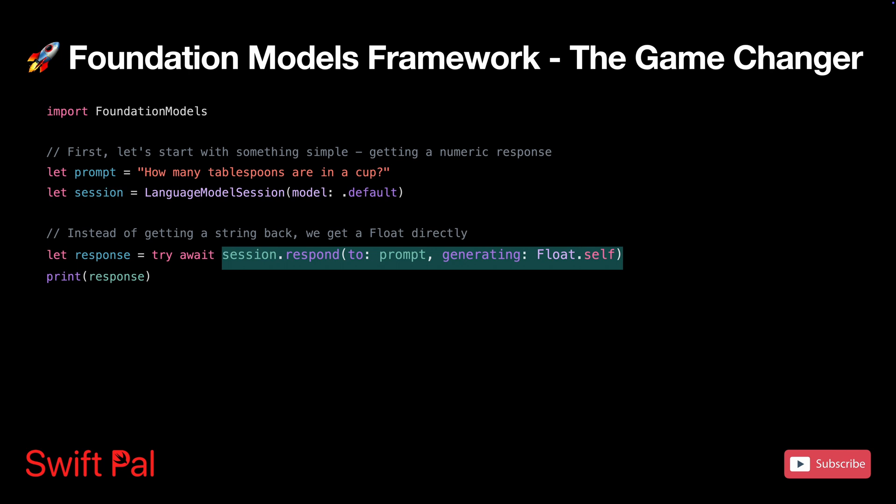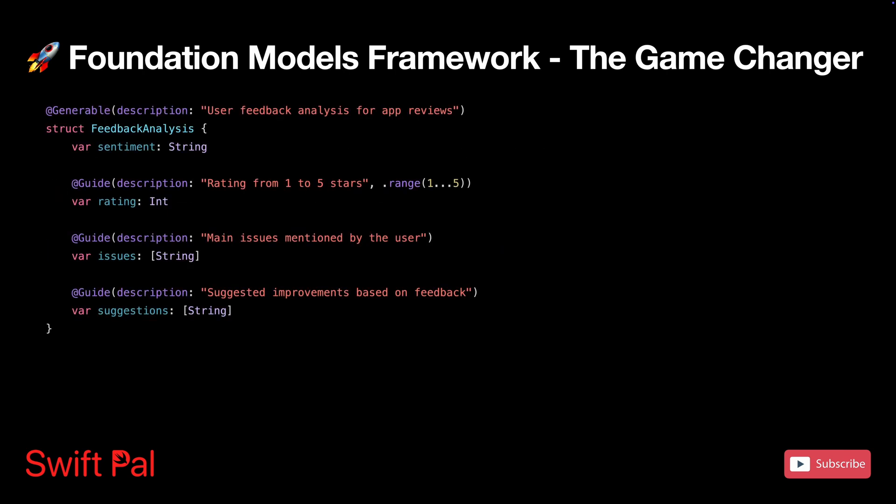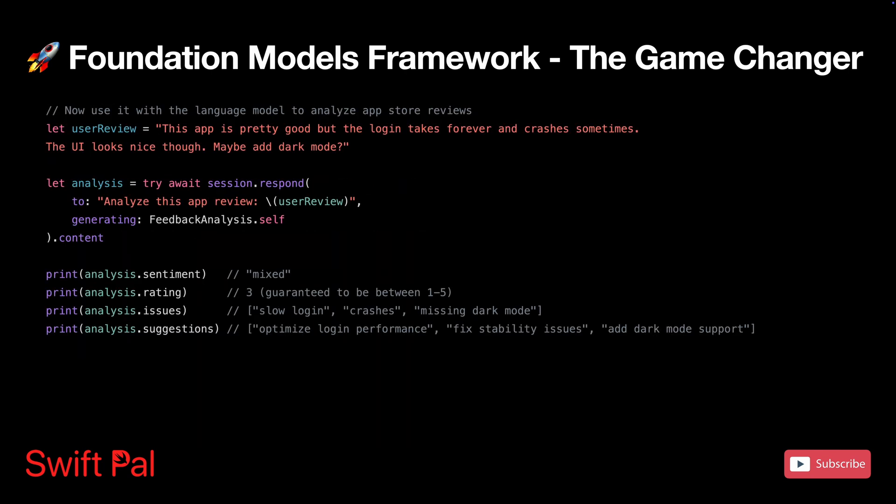You can create your own custom data structures and have the model populate them directly. The `@Generable` macro tells the framework that a struct can be generated by the language model, and the `@Guide` macro gives you fine-grained control over individual properties. This is huge for building reliable apps — you're not getting back unpredictable text; you're getting properly typed Swift objects with guaranteed constraints. Think content management systems, quiz-generating educational apps, or business apps that categorize unstructured input data.